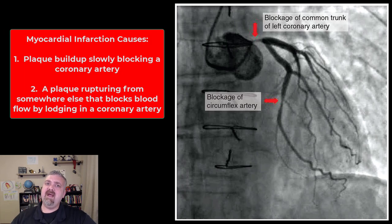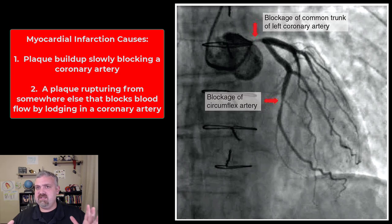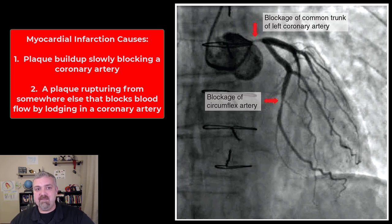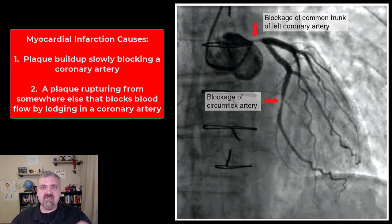The two main causes of a myocardial infarction would be a narrowed and blocked artery due to a buildup of atherosclerotic plaque. Plaque is going to contain lipids, cholesterol, macrophages, and other white blood cells.